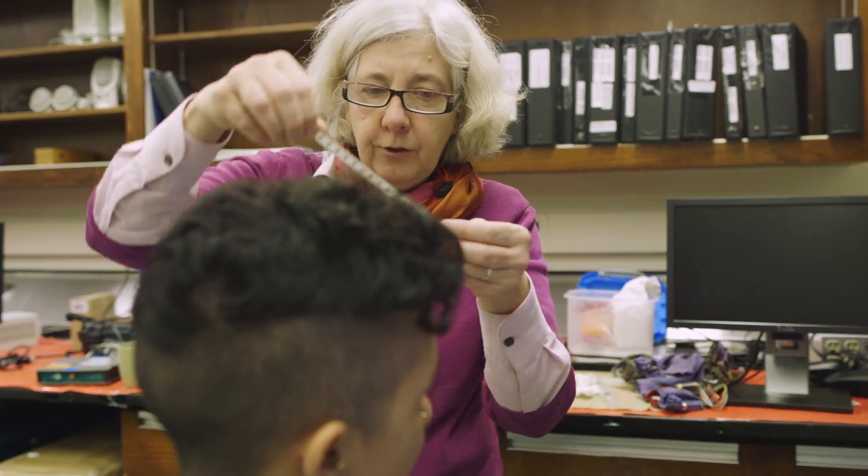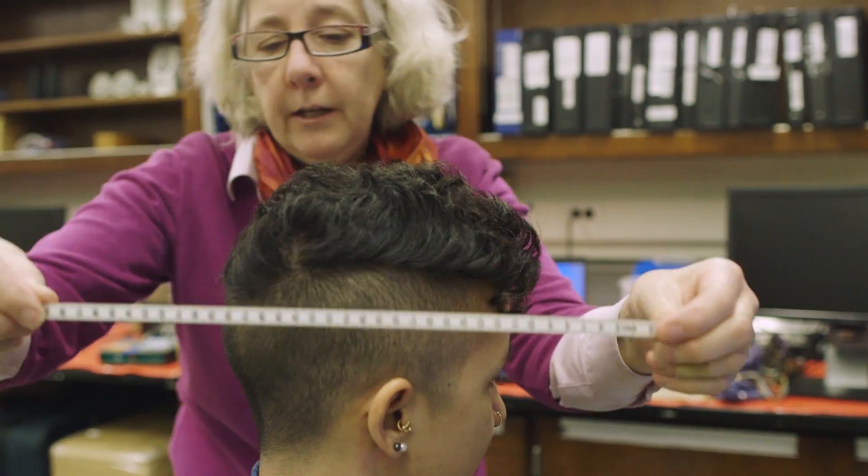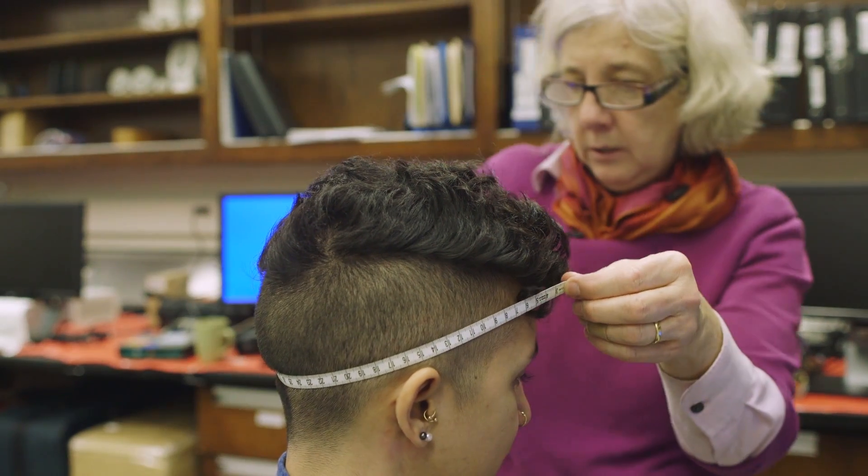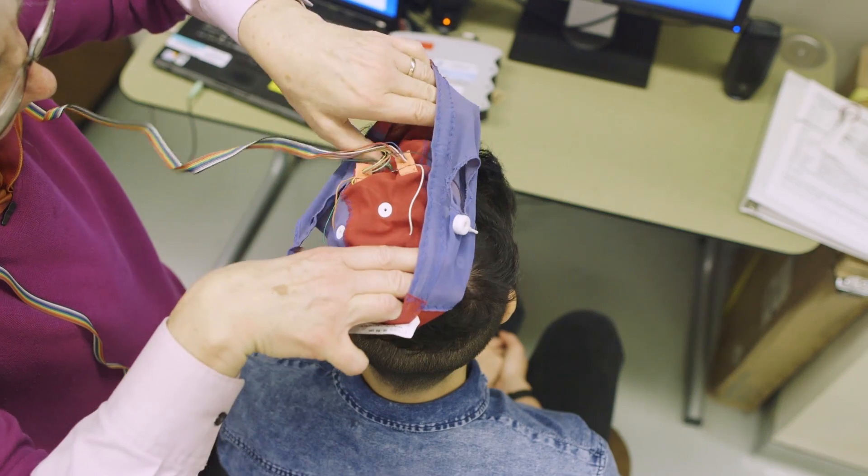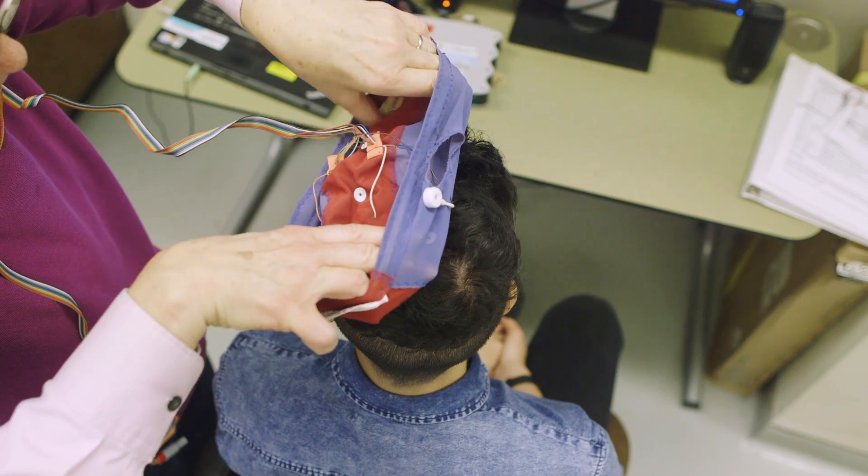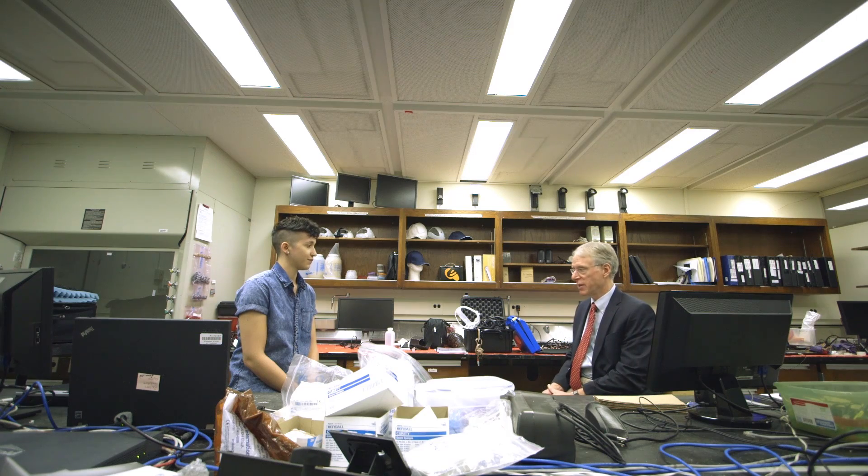So I'm just going to measure the circumference of your head and then the length of it. This is a brain-computer interface system, a very simple one, that's intended to be used by people who are severely disabled, people who may be totally paralyzed and really lose all means of communication.